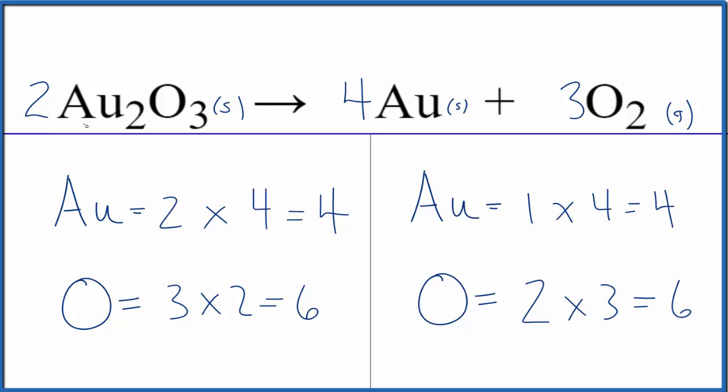This is Dr. B with the balanced equation for the decomposition of gold 3 oxide into gold and oxygen. Au2O3 yields Au plus O2. Thanks for watching.